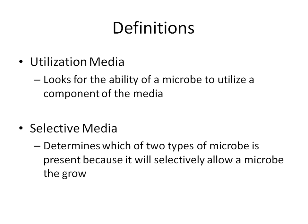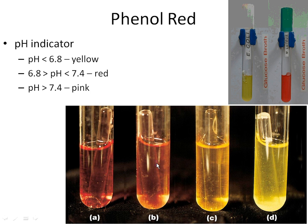As we go next week and into the following week, we'll be doing some selective media. Selective media allow you to select between one type of microbe and another. For example, only gram positives may grow on the media, or only gram negatives may grow, or only halophiles will grow, and so on. We'll do some of those as we get into next week.